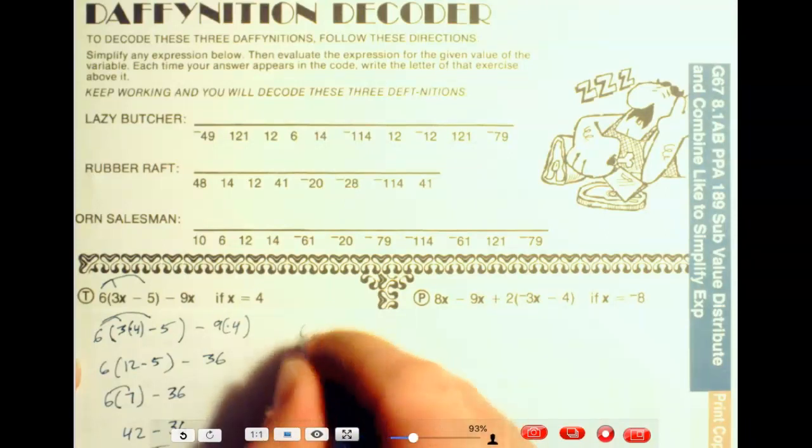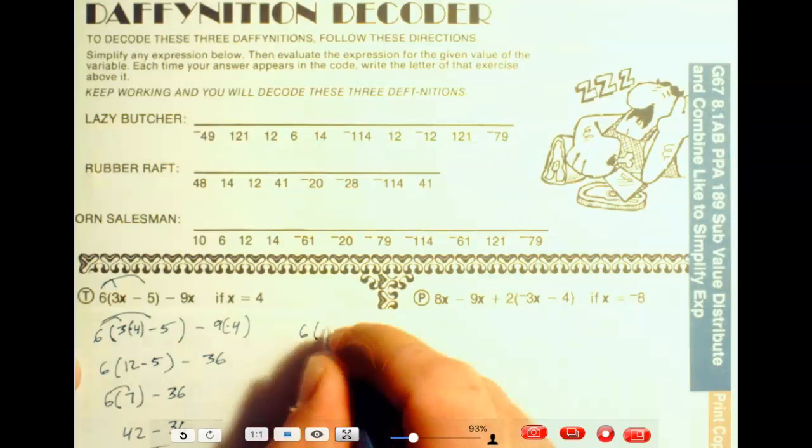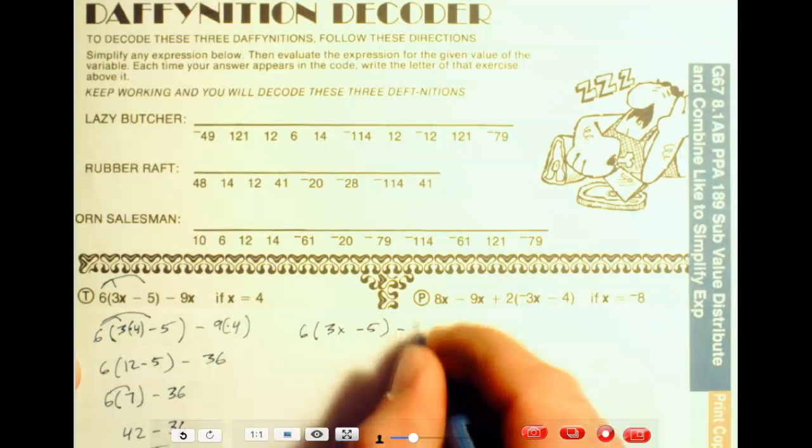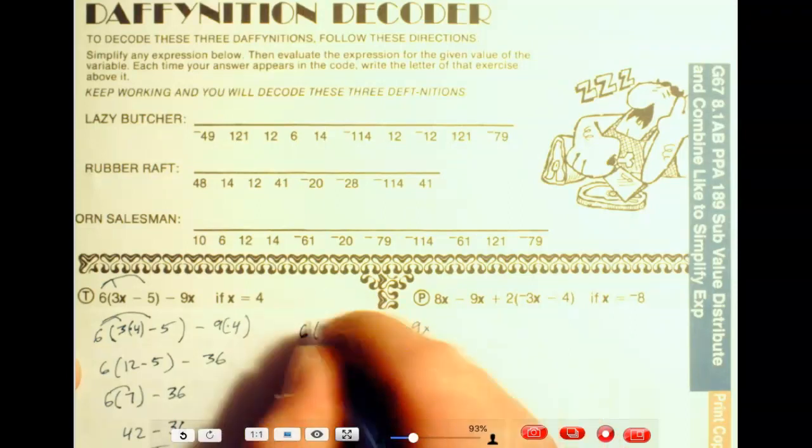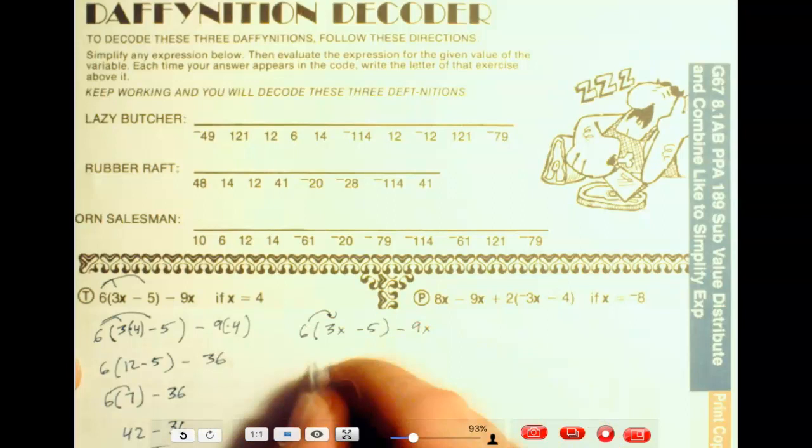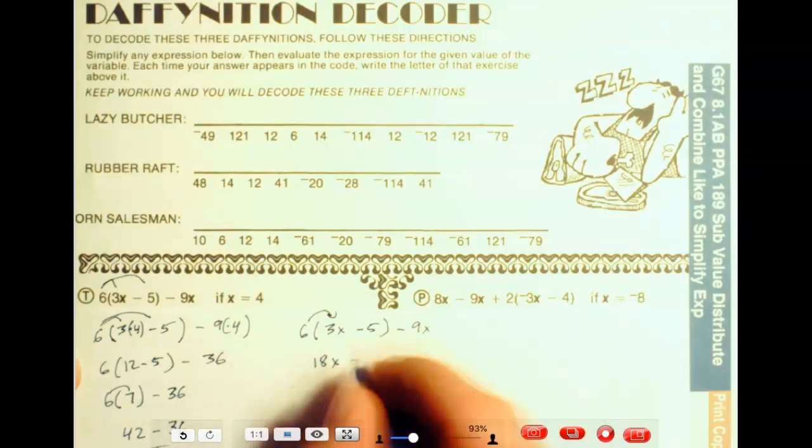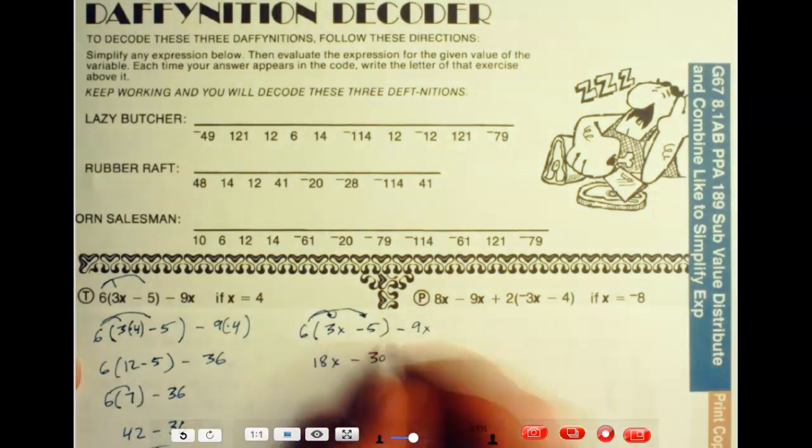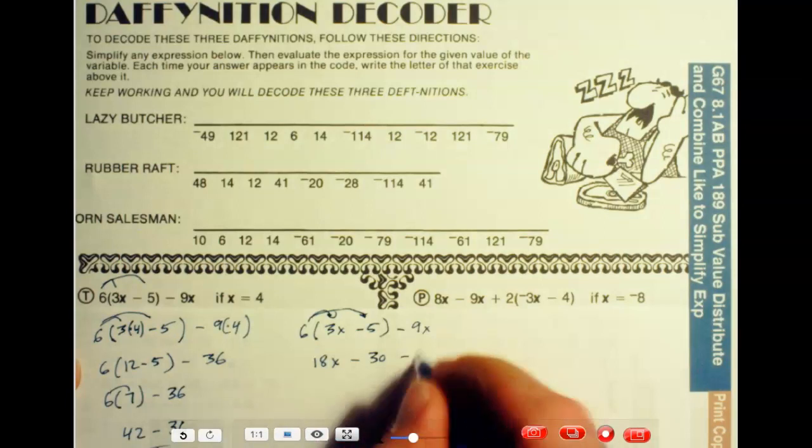So we take 6 times, we have the 3x minus 5, minus 9x. So let's just do it this way. 6 times 3, that would be 18x, minus 6 times 5 here is going to be 30. So positive times negative, that's why it's minus 30, minus 9x.